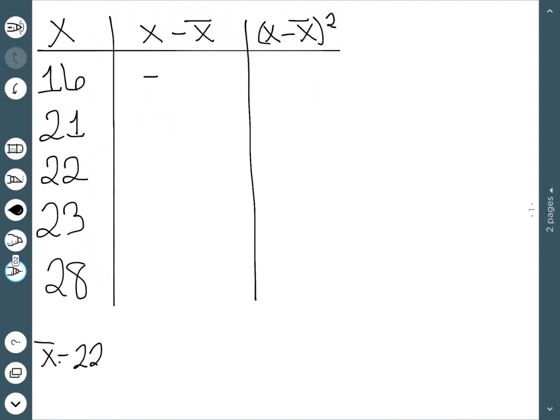So now we need to subtract 22 from everything. 16 minus 22 is negative 6. 21 minus 22 is negative 1. 22 minus 22 is 0. 23 minus 22 is 1. And then 28 minus 22 is positive 6.